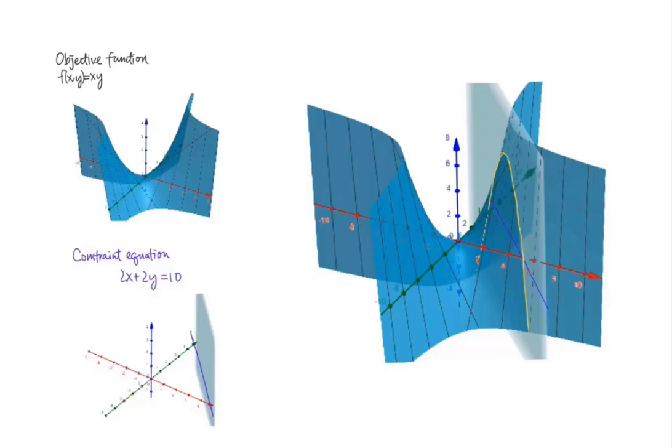If we think of f(x,y) as a mountain, then the output under the constraint will give us a path on the mountain.